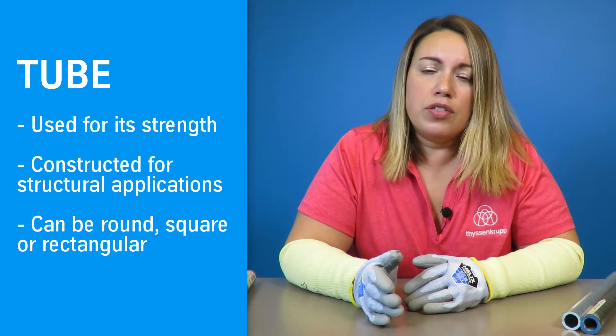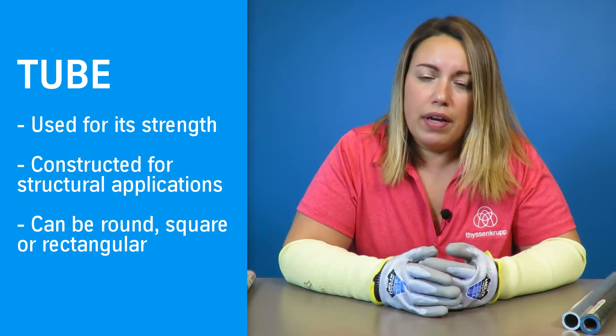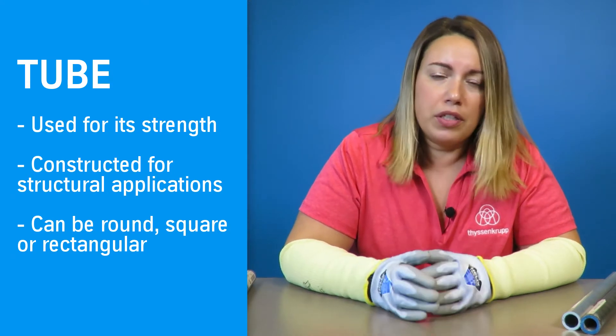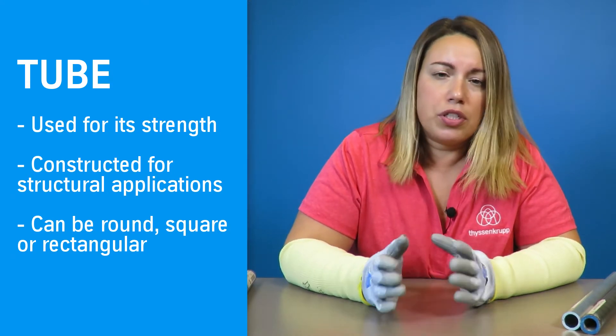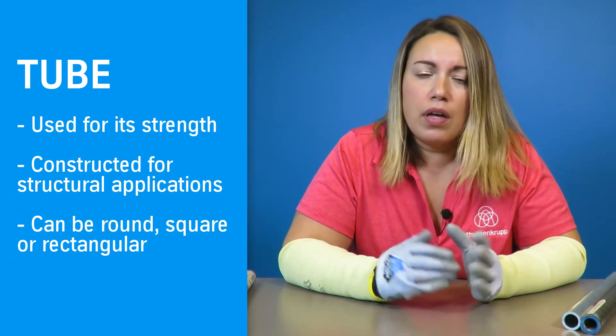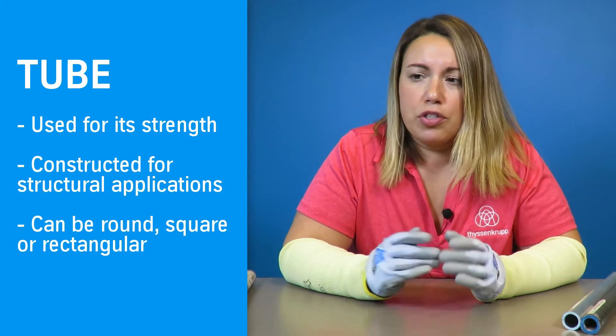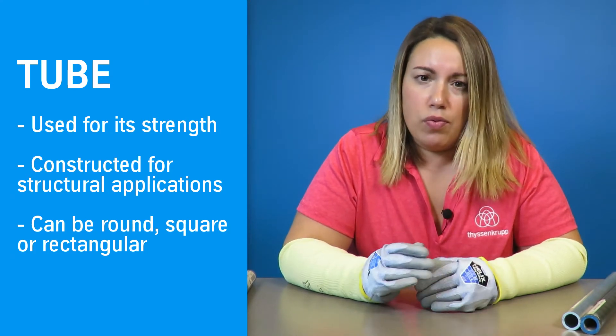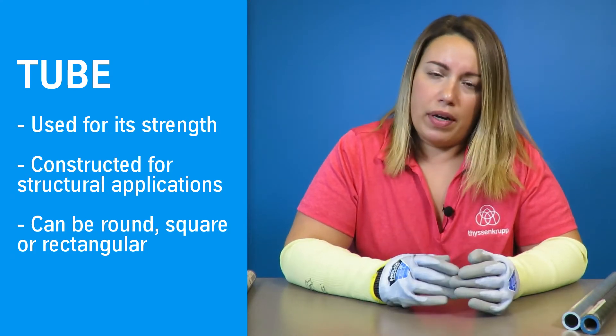A tube, on the other hand, is used for strength. It's used in structural applications such as framing. A tube can be round, square, or rectangle.